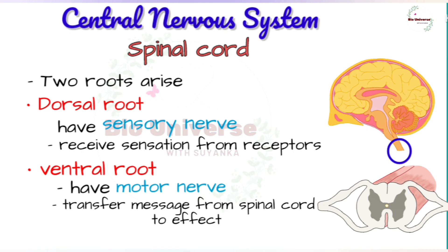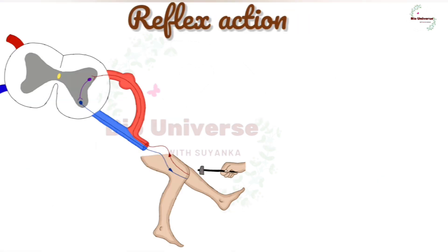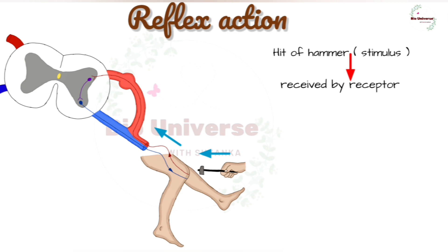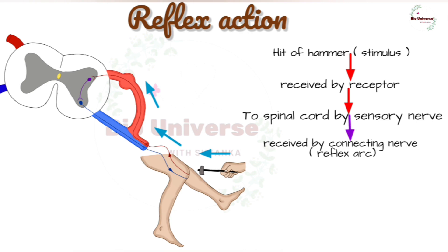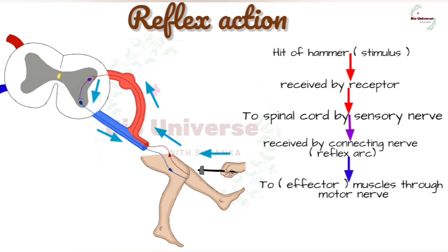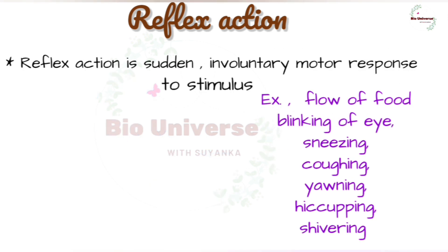If someone hits your leg with a hammer, the leg is immediately withdrawn. In this type of reflex action, the impact of the hammer is the stimulus received by the receptor and sent to the spinal cord through the sensory nerve. The message is received by the connecting nerve in the spinal cord, which then sends a response through the motor nerve to the muscles to pull the leg away. Thus, reflex action is a sudden involuntary motor response to a stimulus. Other examples include blinking in strong light, sneezing, coughing, yawning, hiccuping, and shivering.